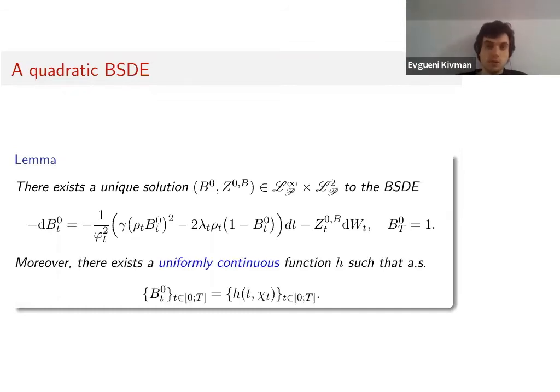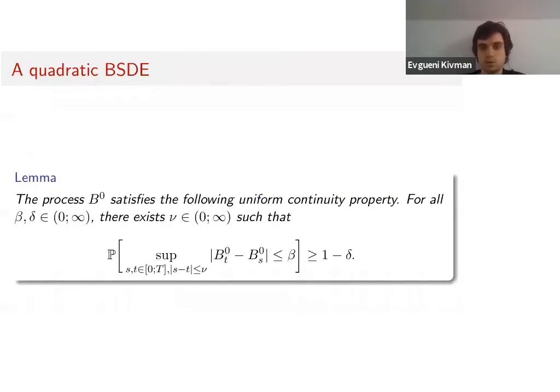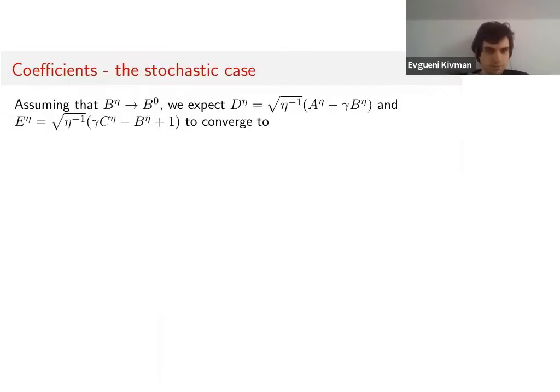What is interesting here: the B⁰ process is a uniformly continuous function of the diffusion we have just introduced. We have in the literature already that this function is continuous, but not that it's uniformly continuous. We will need this in order to prove this property that says increments of B⁰ are not too large, which is a regularity property we need for many things.